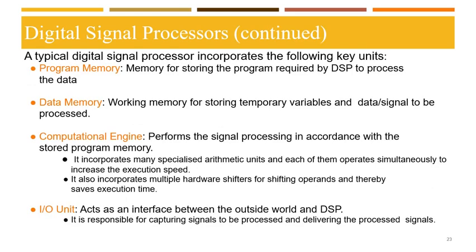DSPs include the following key units: program memory, which stores the program required by the DSP to process data; data memory, which is working memory for storing temporary variables and signals to be processed; a computational engine, which performs signal processing in accordance with the stored program, incorporating many specialized arithmetic units operating simultaneously to increase execution speed, along with multiple hardware shifters; and an I/O unit, which acts as an interface between the outside world and the DSP, capturing signals to be processed and delivering processed signals.